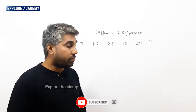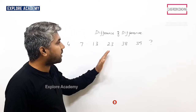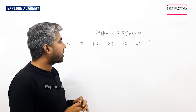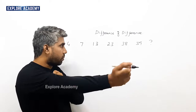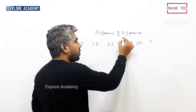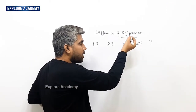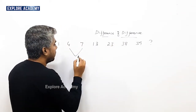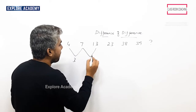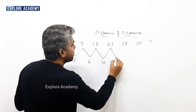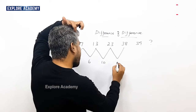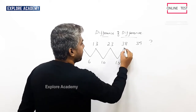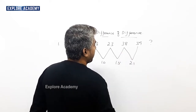Let's say this is 4, 7, 13, 23, 38, 59. We can go back to the difference of the difference. First time the difference is 3, 6, 10, 15, 21.